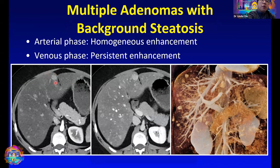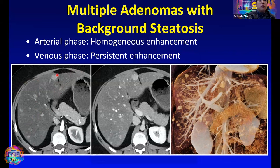Here is an example where we have multiple adenomas and background steatosis. On the arterial phase, there are multiple enhancing nodules throughout the liver. Since the background liver is steatotic but doesn't look cirrhotic, adenomas would be a very good choice — and adenomas can be multiple, making this a very good diagnosis for this imaging appearance. On the venous phase, we see persistent enhancement of these nodules. On the cinematic rendered image, when we render the background liver translucent, we can appreciate the sheer number of enhancing foci throughout the liver.